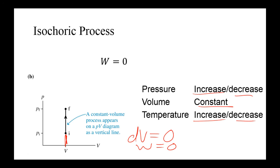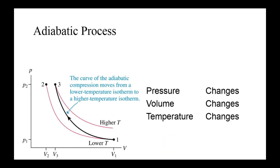For the adiabatic process, all three state variables — pressure, volume, and temperature — actually change. The path that an adiabatic process takes goes from a low temperature, high volume to a high temperature, low volume. Again, we won't be dealing with this too much in this course. Let's see if you can identify and match the letters of the different processes with the names of the process shown on the diagram.